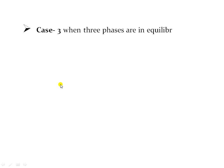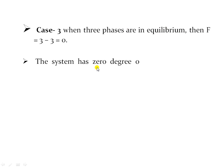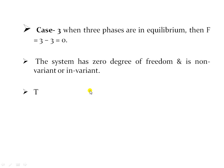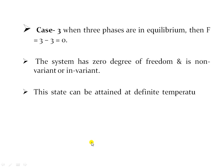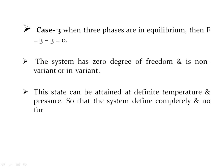Case three: when three phases are in equilibrium, your F value becomes zero and the system is known as non-variant or invariant. The state can be attained at a definite temperature and pressure so that the system is completely defined and no further statement of external conditions is necessary to describe your system.